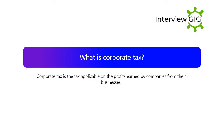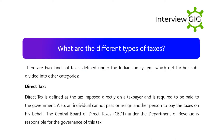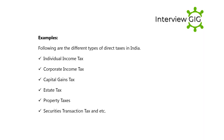What is corporate tax? Corporate tax is the tax applicable on the profits earned by companies from their businesses. What are the different types of taxes? There are two kinds of taxes defined under the Indian tax system which get further subdivided into other categories. Direct tax is defined as a tax imposed directly on a taxpayer and is required to be paid to the government. An individual cannot pass or assign another person to pay the taxes on his behalf. The Central Board of Direct Taxes (CBDT) under the Department of Revenue is responsible for the governance of this tax. Examples of direct taxes in India include individual income tax, corporate income tax, capital gains tax, estate tax, property taxes, securities transaction tax, etc.